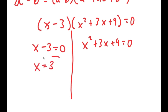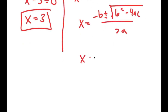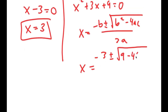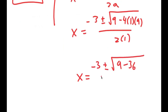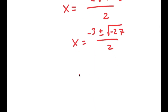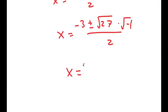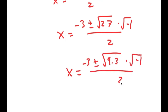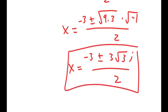Obviously for x minus 3 equals 0, x equals 3. For x squared plus 3x plus 9 equals 0, I use the quadratic formula: negative b plus or minus the square root of b squared minus 4ac, all over 2a. This gives negative 3 plus or minus the square root of 9 minus 36 over 2, which equals negative 3 plus or minus the square root of negative 27 over 2. Since 27 equals 9 times 3 and the square root of negative 1 equals i, this simplifies to negative 3 plus or minus 3 times square root of 3 times i, all over 2. So these are the two more solutions to this equation.